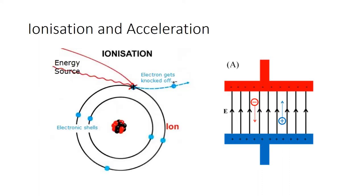Ionization is simply taking an atom or molecule of your sample and applying energy that removes one of the electrons. Some mass spectrometers work by adding an electron to give a negative ion, but most work by removing an electron to give a positive ion. Once you've created a positive ion, you need to accelerate it to give it momentum and kinetic energy, which can then be used to separate ions by mass. This is done by placing the ion in a strong electric field — a negative electrode and a positive electrode — and the positive ions are attracted strongly toward the negative electrode, which typically has a small hole through which the ions continue once accelerated.